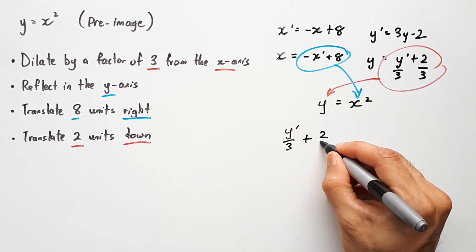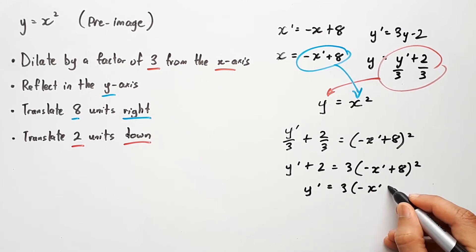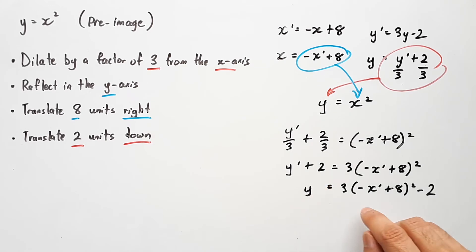So when you sub it all in and rearrange, you will end up with y' equals 3(-x' + 8)² - 2. This is known as the image equation, but just so it looks like a proper equation, you are now allowed to remove the apostrophes. And that is our final answer.